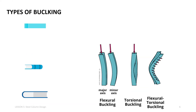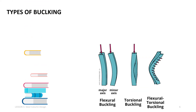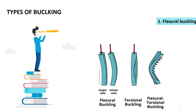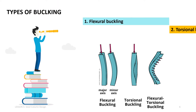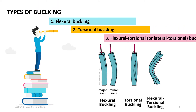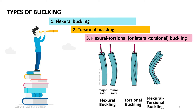Depending on the cross-section, the loading and the boundary conditions of a member, several different types of buckling may occur. These are commonly classified as flexural buckling, torsional buckling, and flexural-torsional or lateral-torsional buckling. The following figure illustrates the three buckling types for members.